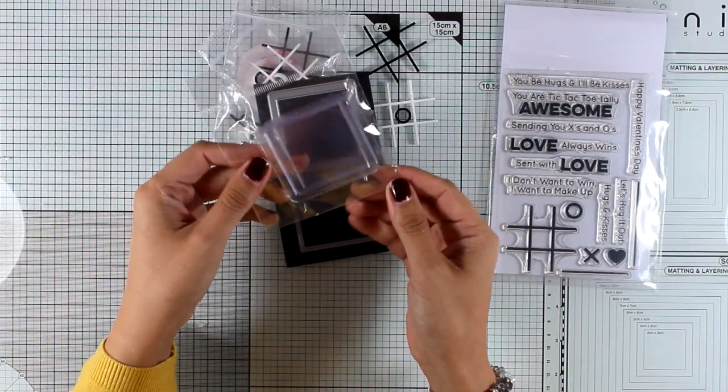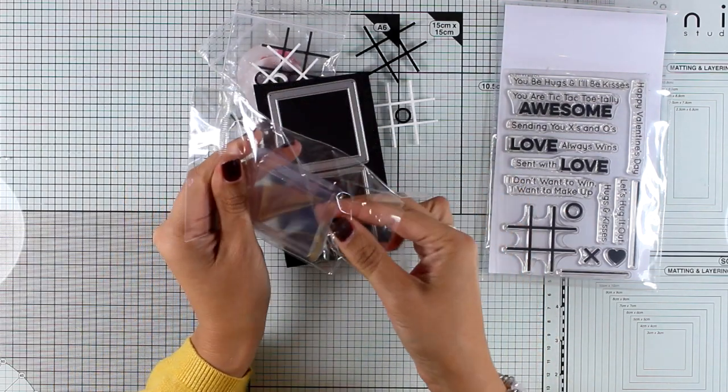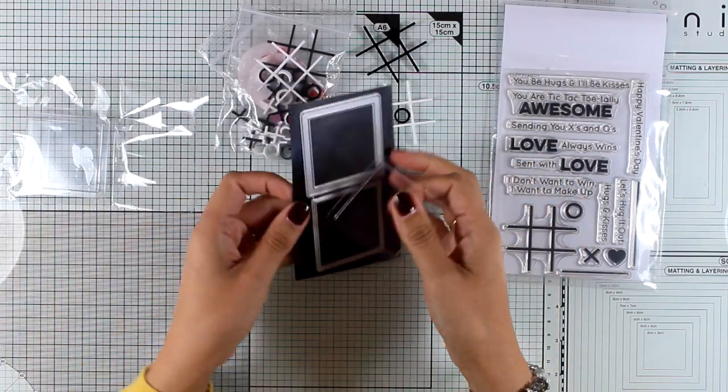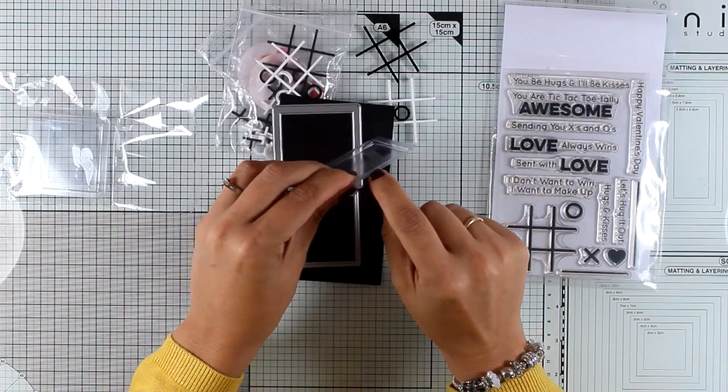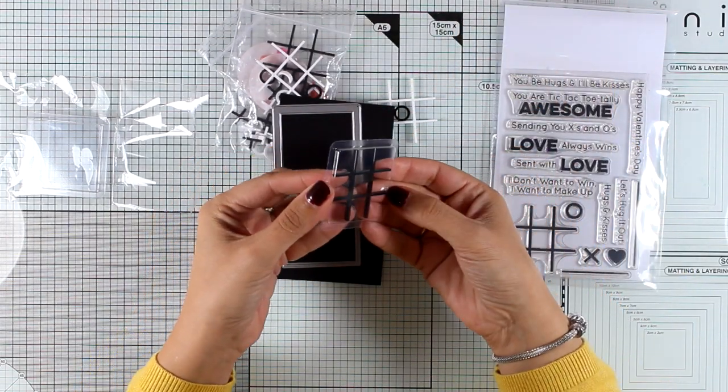Now there is also available this frame square die that you can combine with these plastic pouches that are also square that fit nicely inside those frames. So if you want to go dimensional and create a shaker card with that tic-tac-toe inside, you can see that it fits perfectly there.